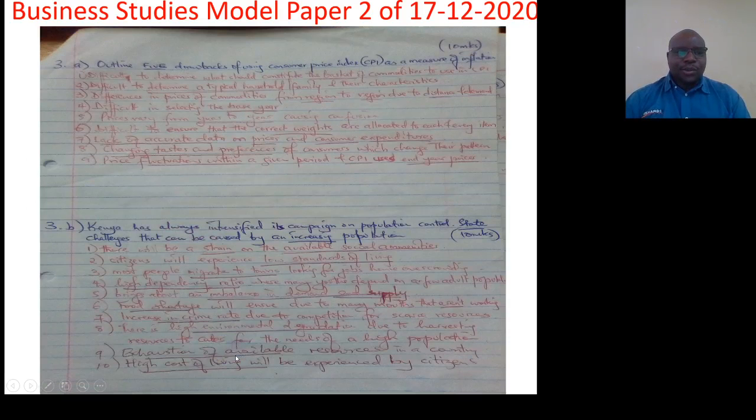We move on to number three. Outline five drawbacks of using consumer price index as a measure of inflation. So one, difficulty to determine what should constitute the basket of commodities to use in consumer price index.